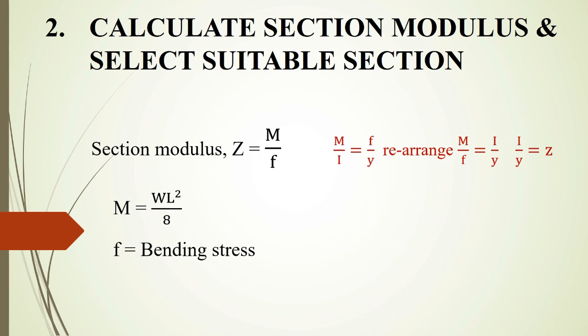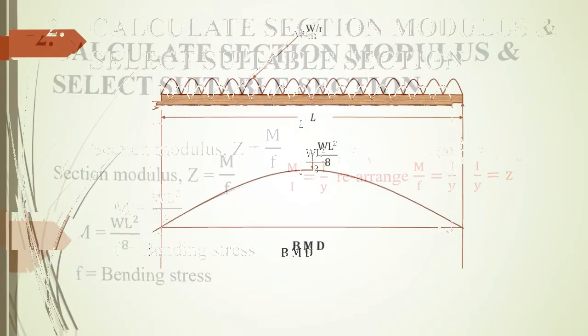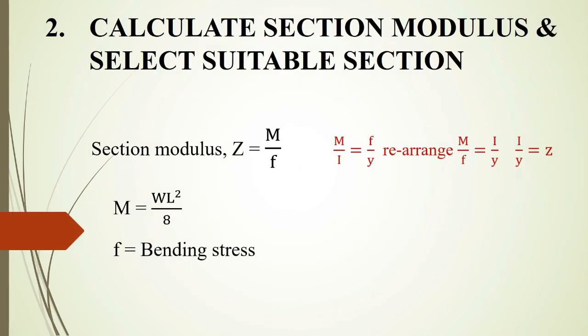We will determine how to find the section. M is the bending moment. For a simply supported beam with a uniformly distributed load, the bending moment diagram gives M = WL²/8. Using that bending moment value and the given bending stress f, we calculate the required Z value.